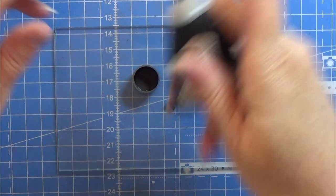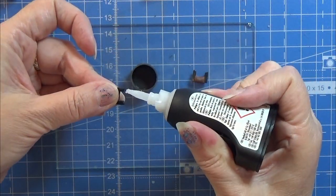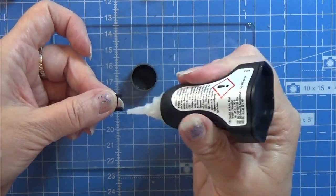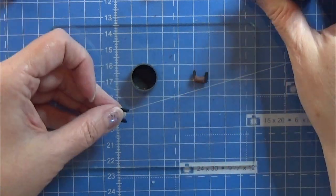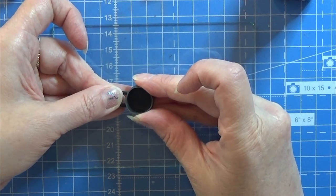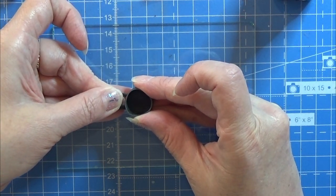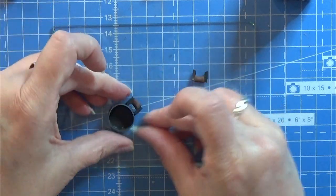Then I am using a tiny bit of my super gel glue. You can use another kind of glue if it's better for you. And I am going to glue on the handles on this little pot.